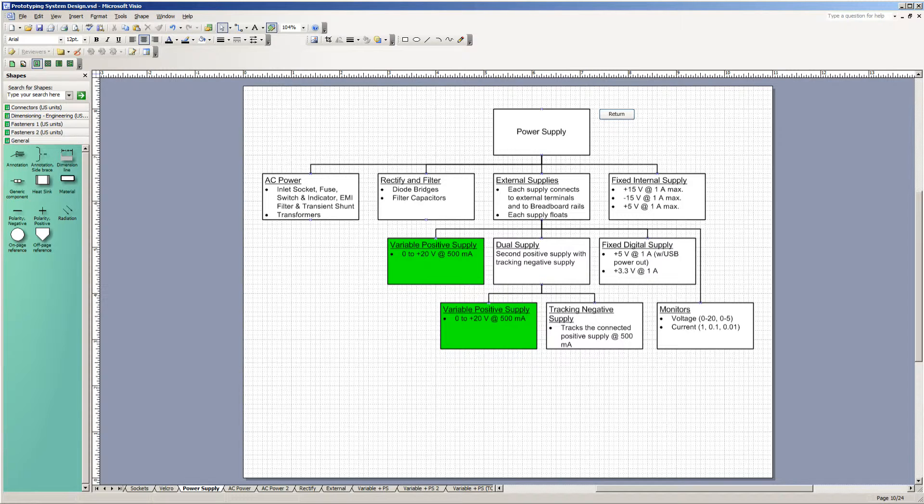Now, as for external supplies, there is a stand-alone variable positive power supply going from 0 to plus 20 volts at 500 milliamps. And that's what we just completed.